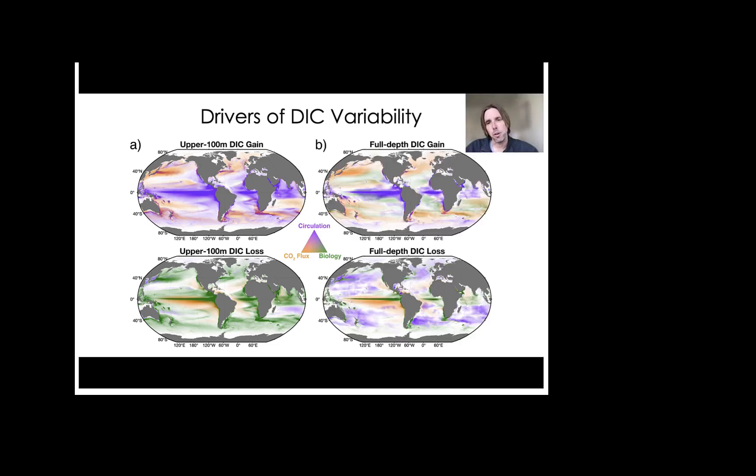Now in panel B on the right hand side, I'm showing the same results, but for the full depth ocean. And I want you to note that the air-sea CO2 flux, the orange colors, is the same in both the upper 100 meters and the full depth ocean. So in terms of DIC gain, which is shown in the top panel of B, you can see that the circulation, the purple colors, is generally reduced due to substantial compensation between the advective and diffusive processes in the deep water column. Now biology provides a gain of DIC, so the green colors in the upper panel of B, and this is from deep remineralization and it's concentrated primarily in the subtropical regions.